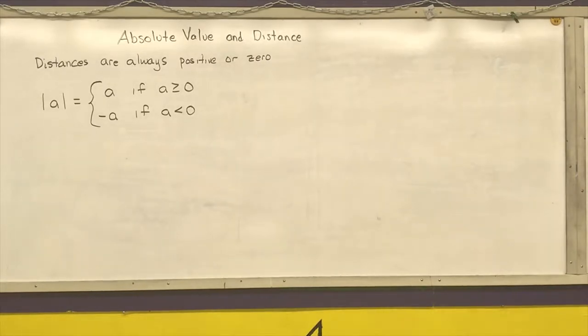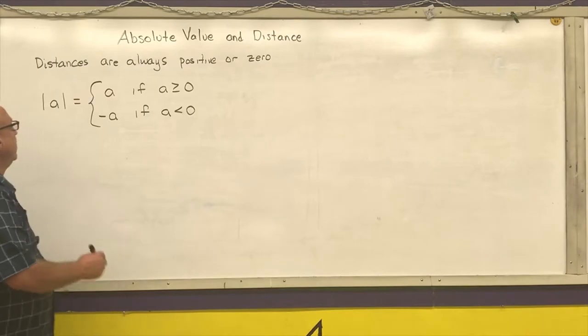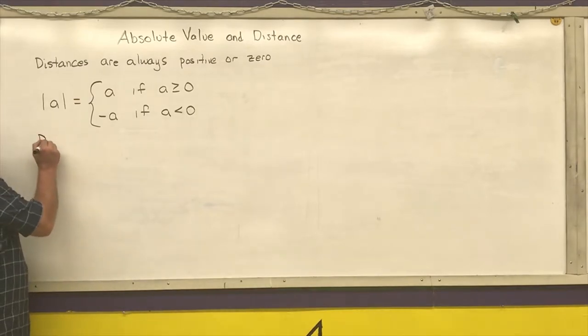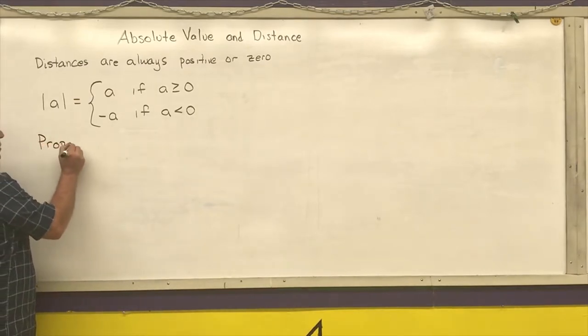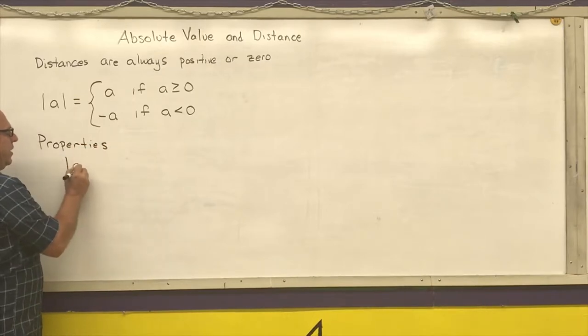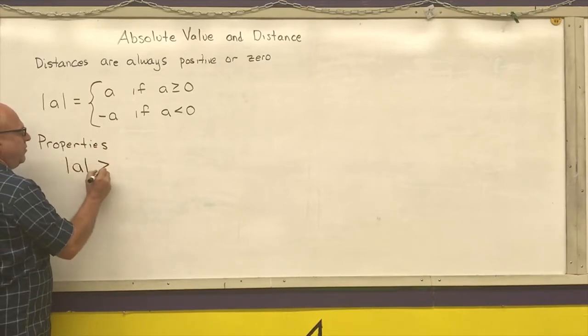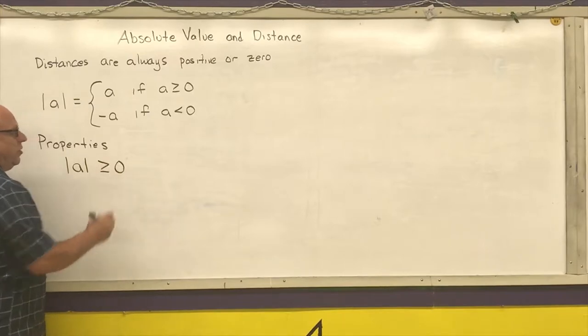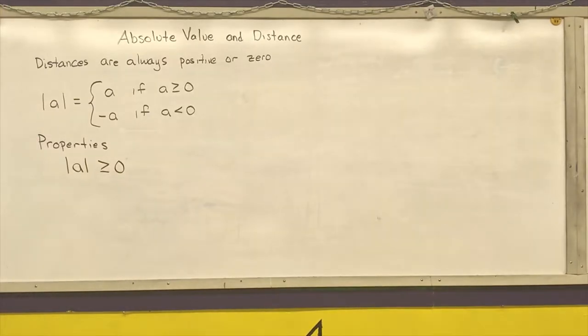Properties of absolute value. The absolute value of A has to be greater than or equal to zero, which states it is always positive or zero.